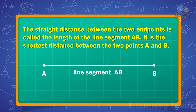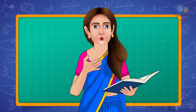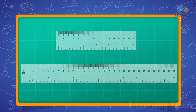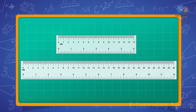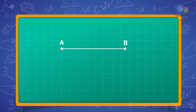It is the shortest distance between two points A and B. We measure the length of a line segment using a ruler. The ruler or scale is marked in centimeters from 0 to 15 or 30. Each centimeter is further divided into 10 parts, and each small part is called a millimeter.